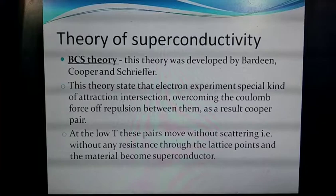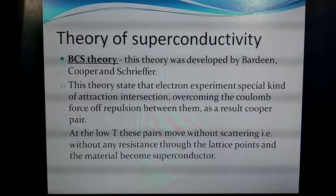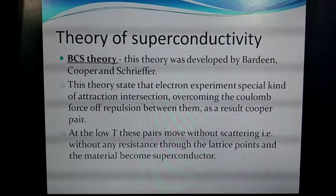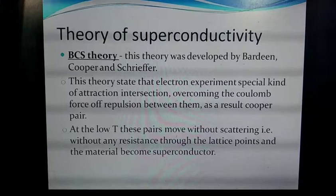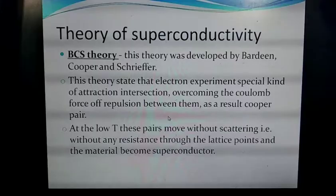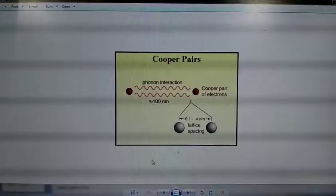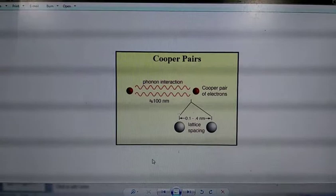The theory behind superconductivity is called BCS theory, which stands for Bardeen, Cooper, and Schrieffer. This theory explains that when one electron slightly distorts the lattice of atoms in a superconductor, it draws toward it a small axis of positive charge, which then attracts a second electron, forming a pair called the Cooper pair or BCS pair, as shown in the diagram.